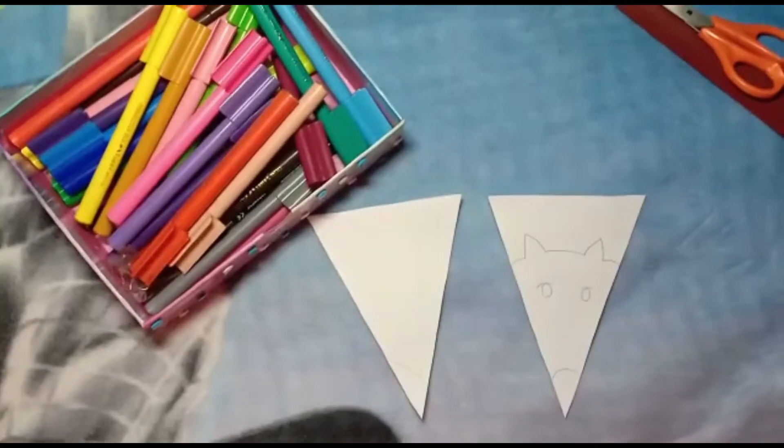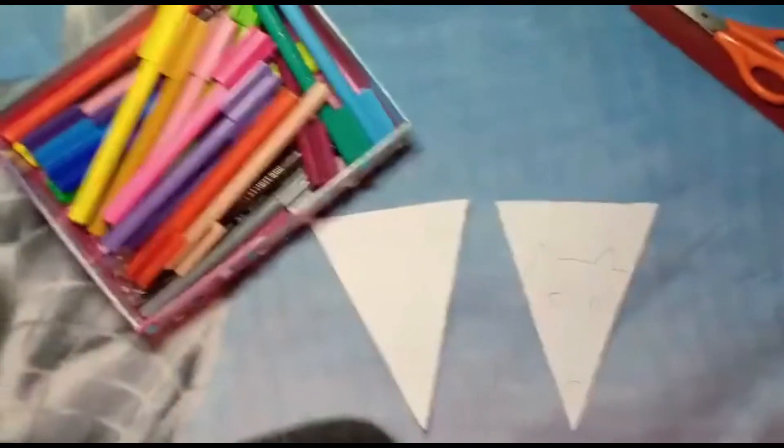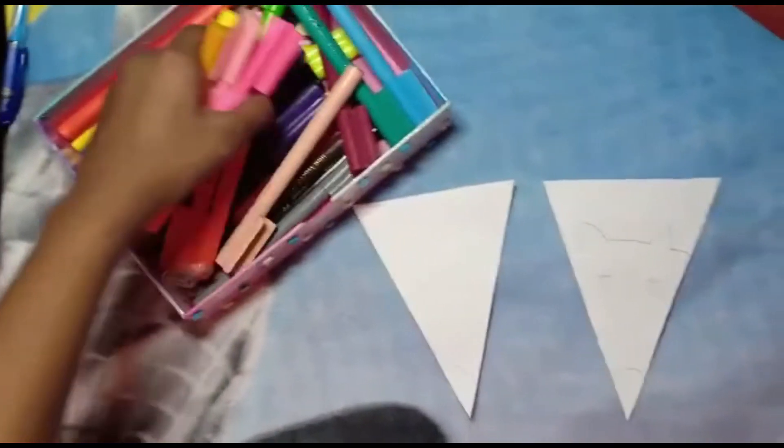And I'm going to draw some animal of my imagination which I don't know what I want to draw in the next triangle. So I'm just going to draw something now. I'm done drawing both. Now I'm going to color.